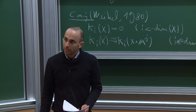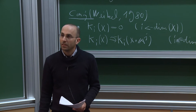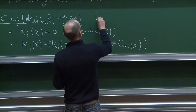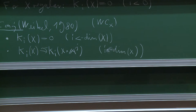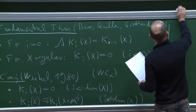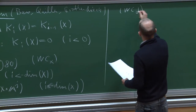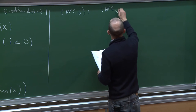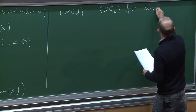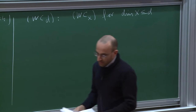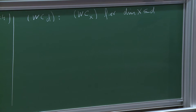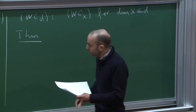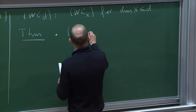There is also a definition of homotopy invariant K-theory. Weibel defines a version of K-theory which is homotopy invariant, and there is the same conjecture for this. Let's call this conjecture WC(X) for the scheme X, and let WC(d) denote the statement that we know this conjecture for all schemes of dimension at most d. Classically, the following theorem has been shown: the first major progress is that Weibel showed this conjecture up to dimension two, so we have the statement WC(2), which is due to Weibel.